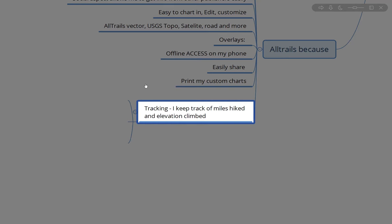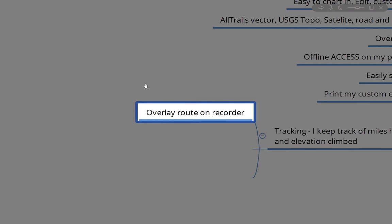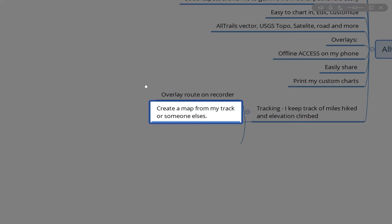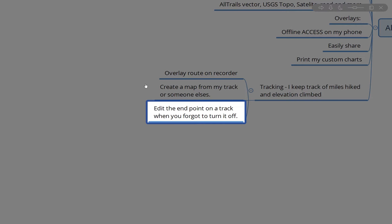There's a recorder feature where you can track miles hiked and elevation gained. I've been keeping track since October 2017, and it's pretty cool to look back — I've climbed over 100,000 feet total. It also gives me a target to beat the next year. You can overlay the recorded route on top of your map, create a map from your track or someone else's, and even edit the endpoint if you forgot to turn off the recorder and it tracked you 20 miles down the road.